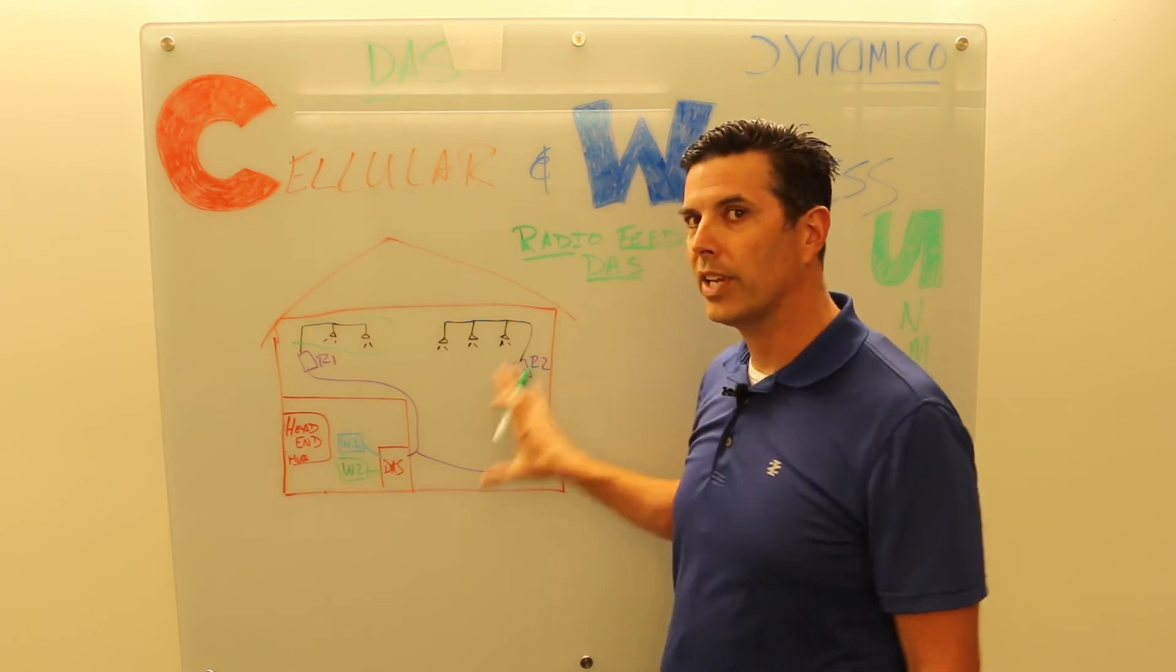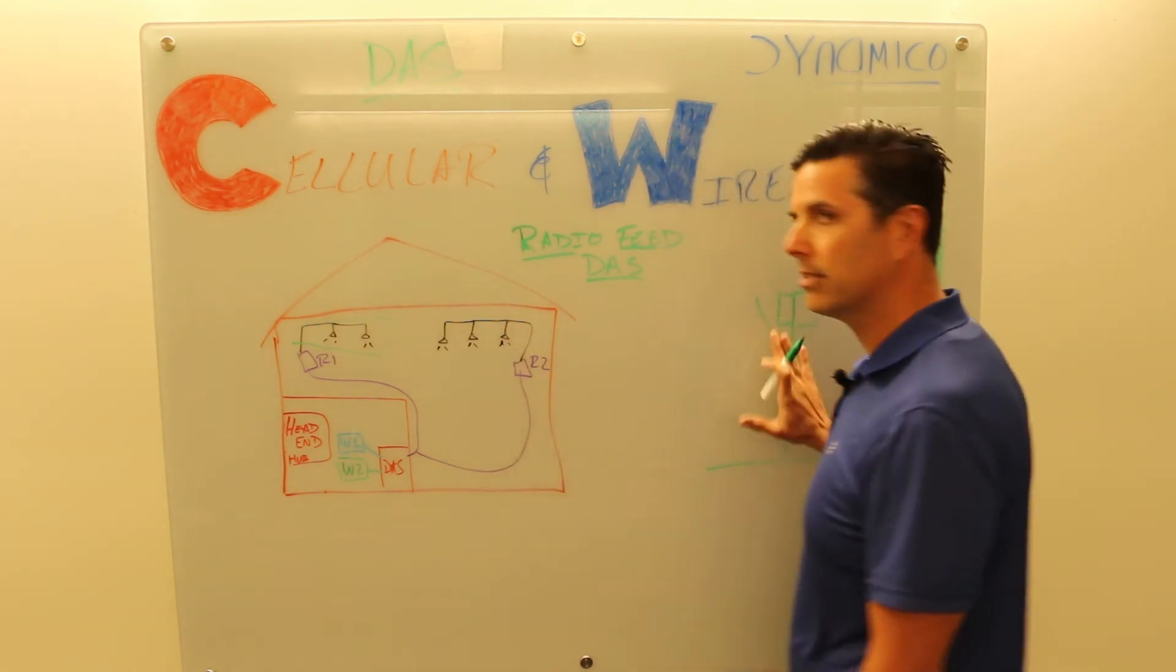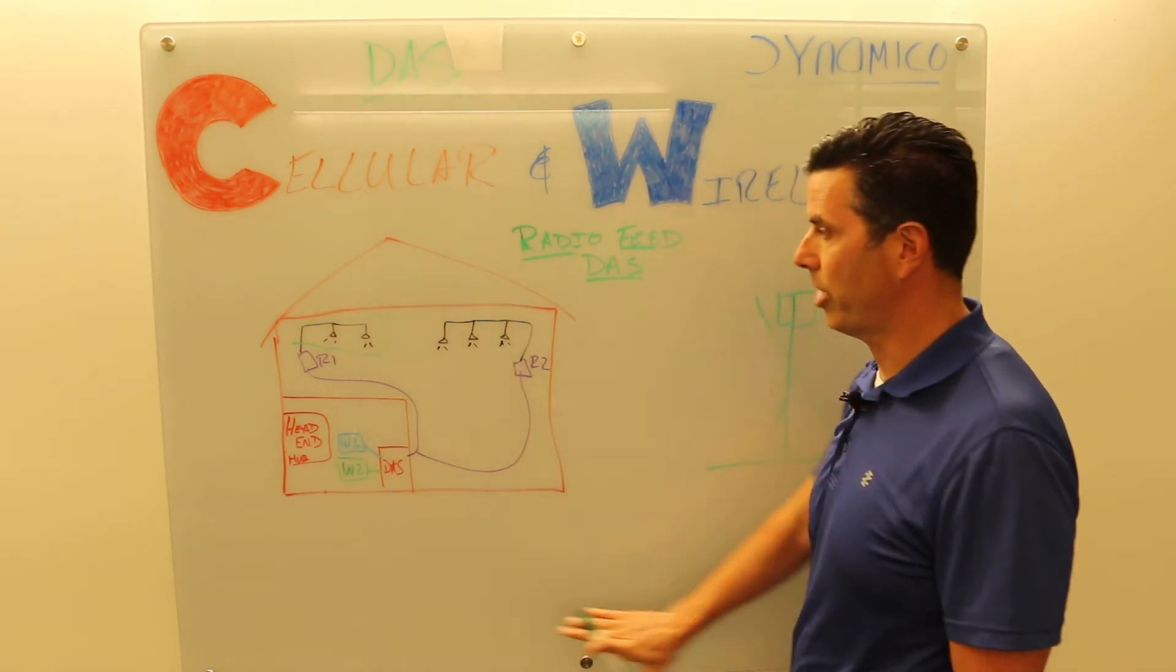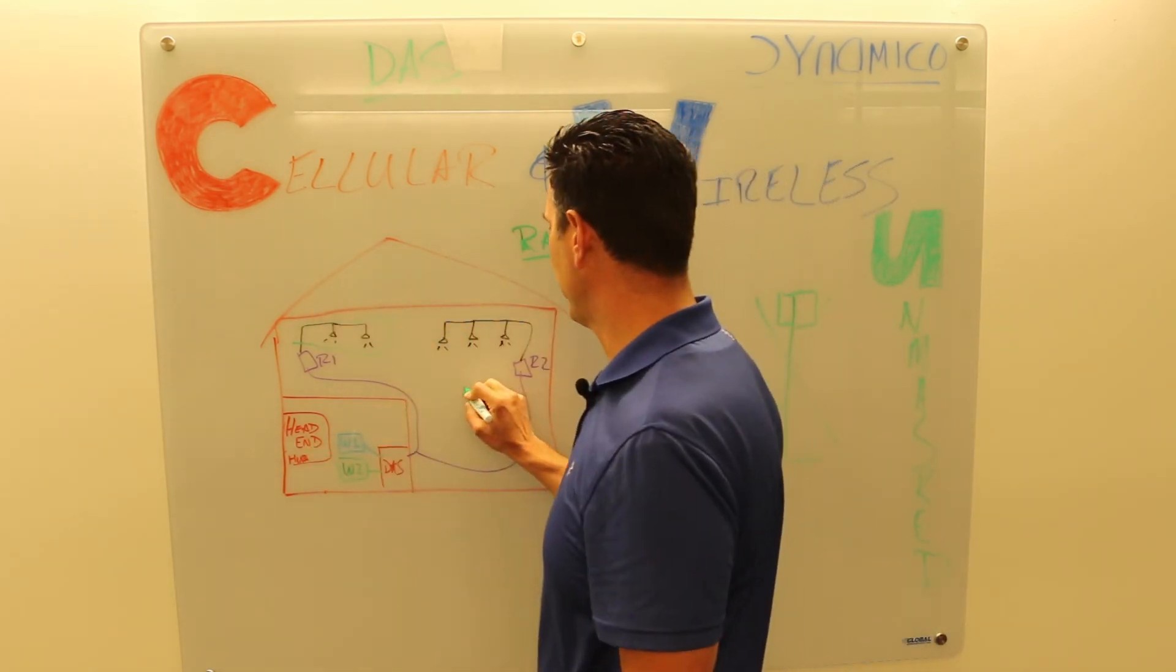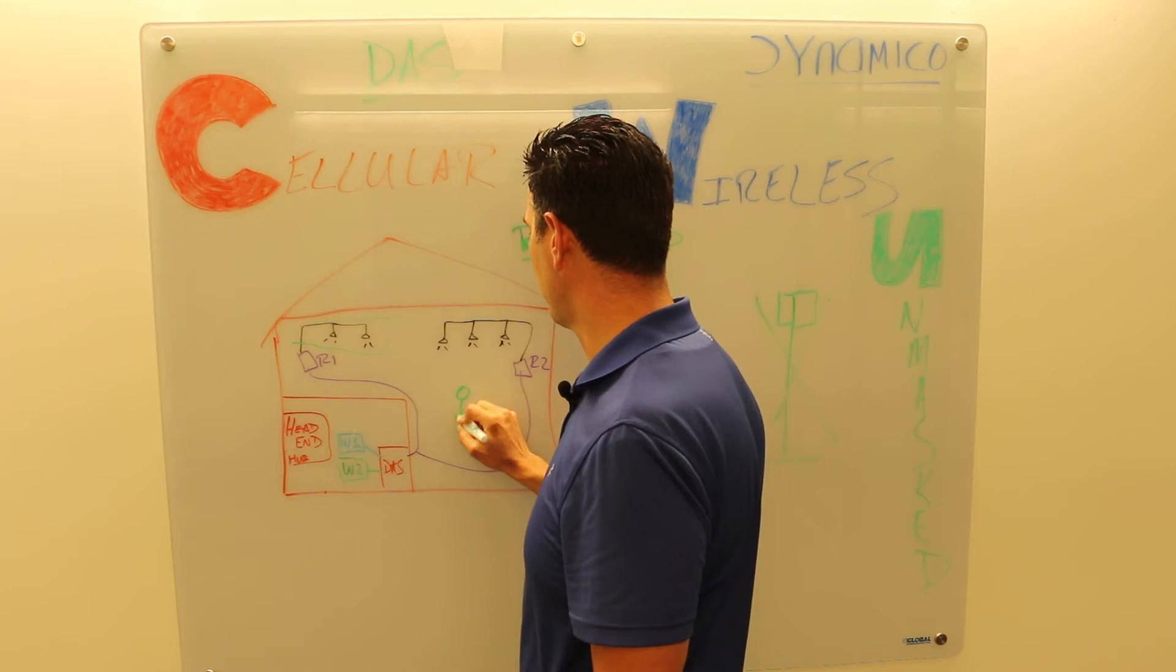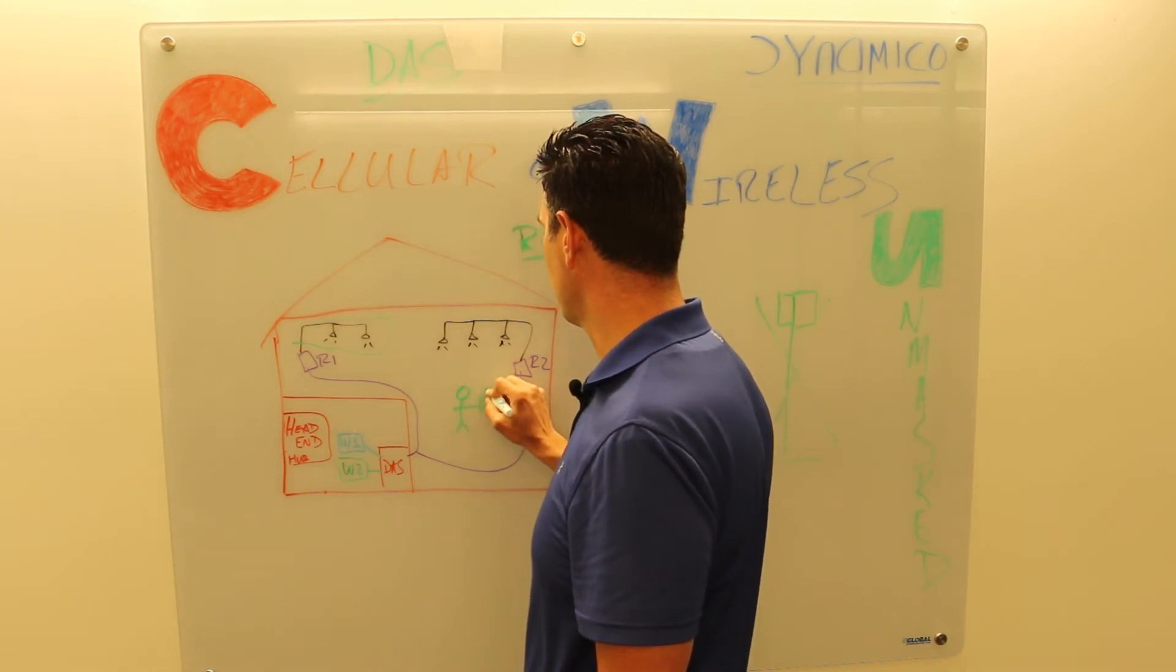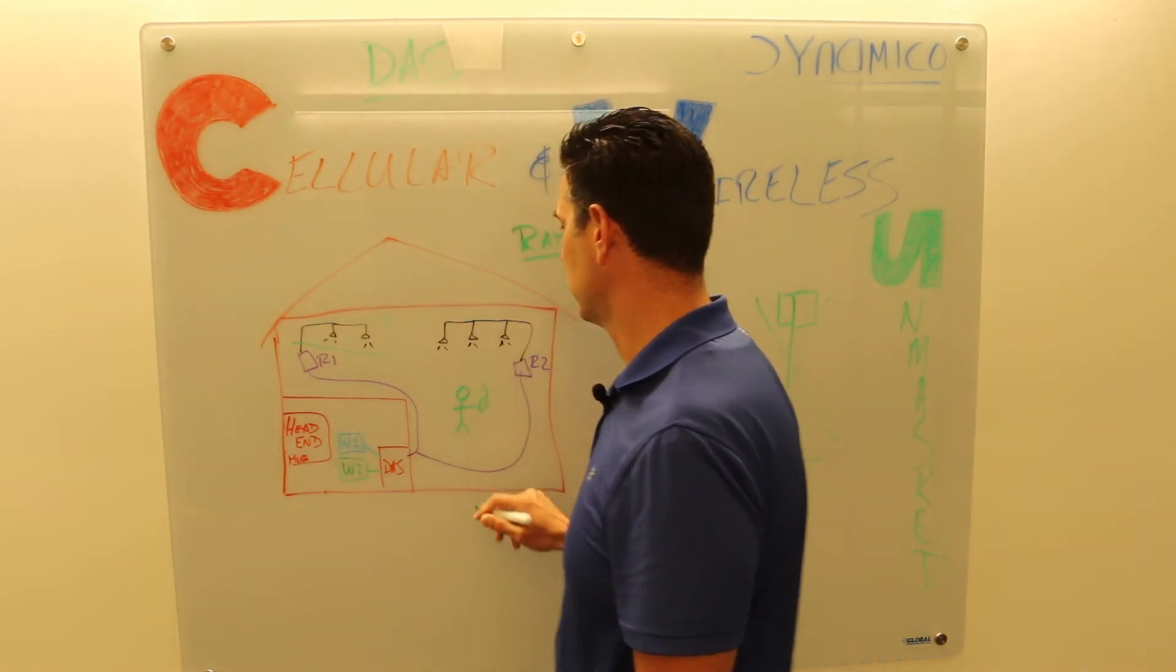So this is how a radio feed DAS works. It does not use the macro system. It generates its own signal that is only used by the folks that are inside that airport, inside that stadium with their own mobile device.